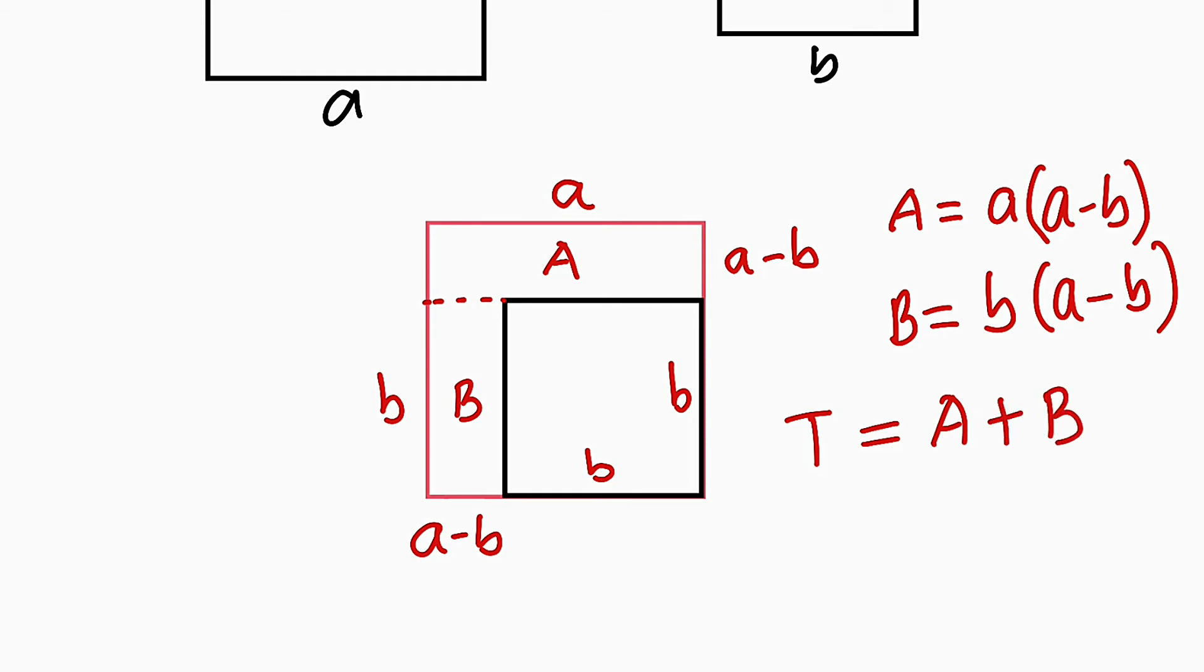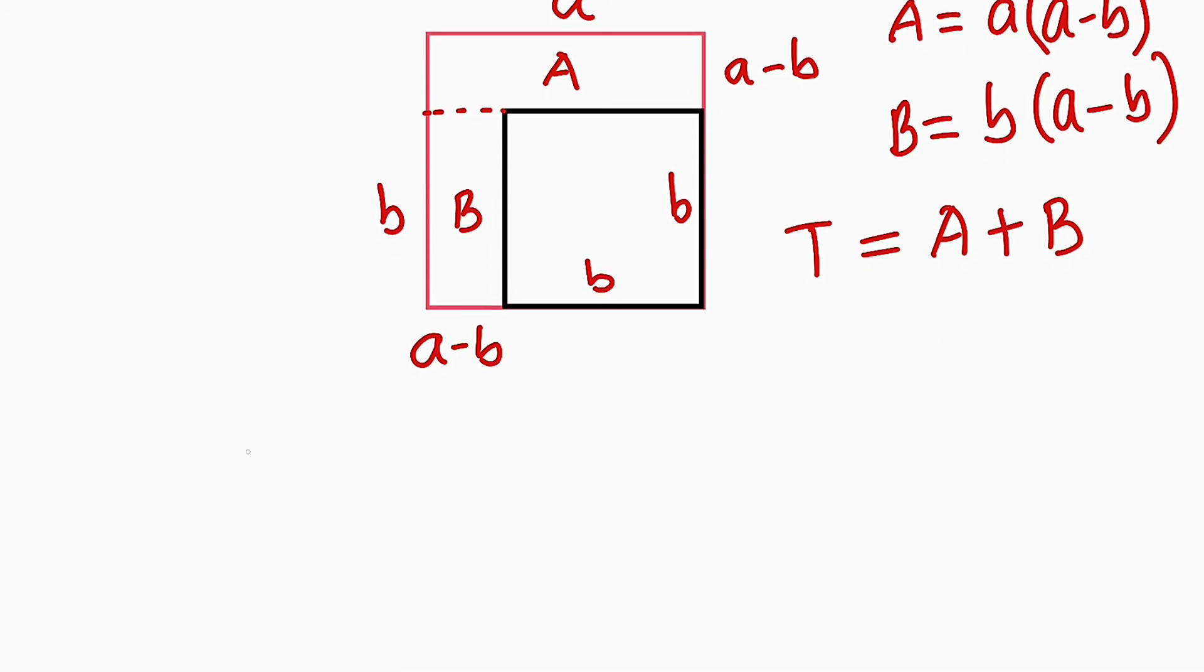So now let us add the two areas together. Total area will be equal to a multiply by a minus b, then we add b multiplied by a minus b.